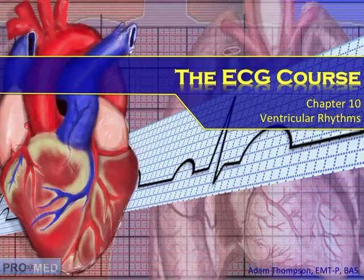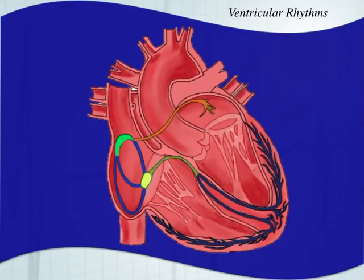Welcome back to the ECG course. This is chapter 10. In this chapter, we're going to start talking about ventricular rhythms. Ventricular rhythms are not a desirable type of rhythm to be in because they're originating in exactly the opposite direction that you would want your heart to originate in.